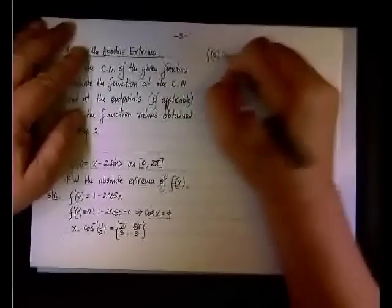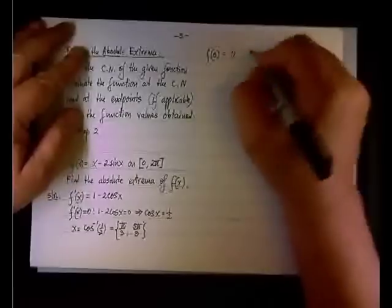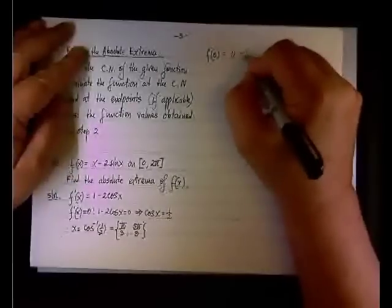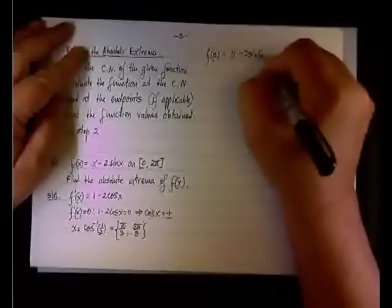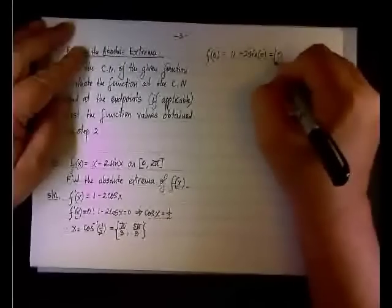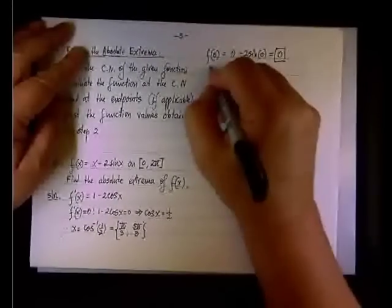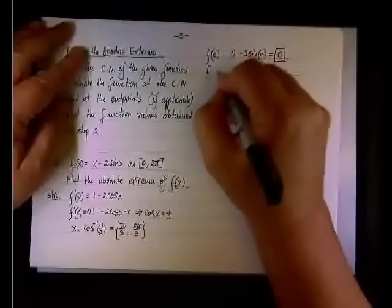Start with f of zero. Well, f of zero will be zero minus two sine of zero. So that's easy, that's zero. So we have one value.